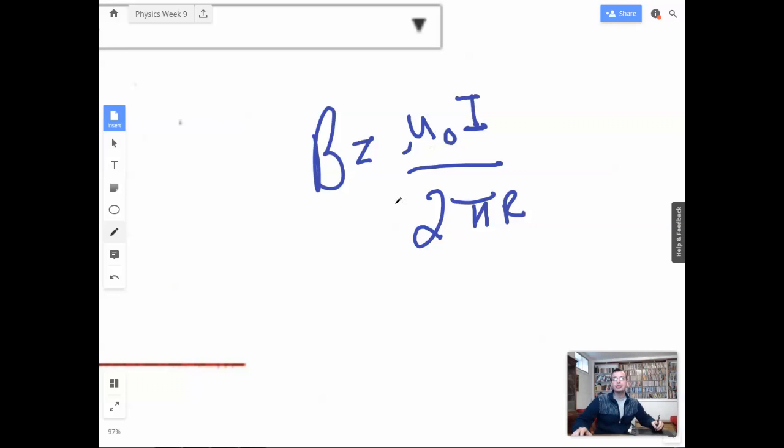Alright, so we'll start by writing up the equation for the magnetic field due to a line, and we'll do an equation for the magnetic field due to a circle or a loop.